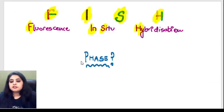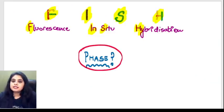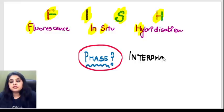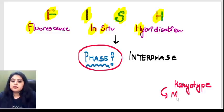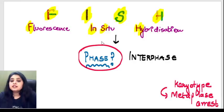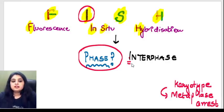To perform a two-color FISH, in which phase will I take the cells? Please remember it's in the resting phase — the interphase. In karyotyping we were arresting cells in the metaphase, whereas in FISH it is an interphase arrest.